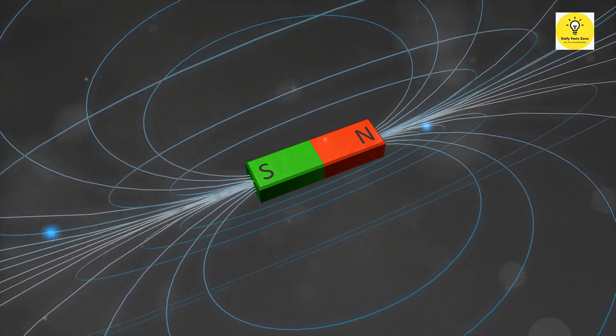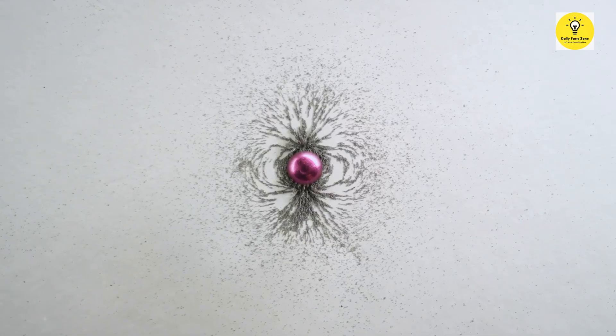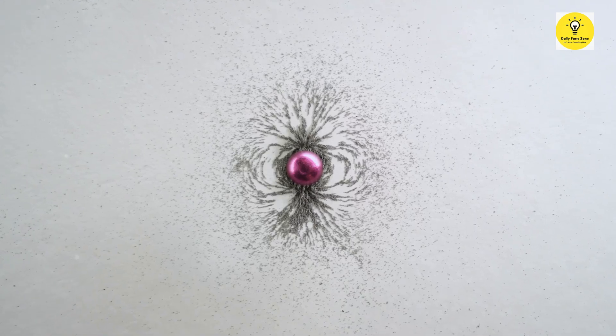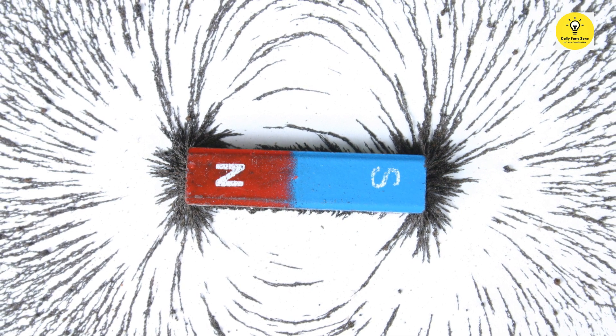This repulsion is a result of the magnetic field lines clashing. The magnetic field lines clash, creating a force that pushes the magnets apart. The repulsive force can be quite strong, depending on the strength of the magnets.